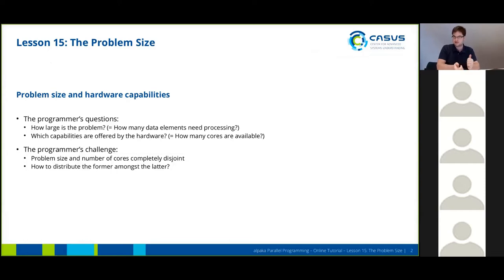First, how large is my problem I want to process? This boils down to how many data elements need processing and which capabilities are offered by my hardware, meaning how many cores I have available. The challenge here is that the problem size and the number of cores are completely disjoint. There's absolutely no relation between your number of cores and your problem size. So now you have to ask yourself how you distribute your problem size among the number of cores you have available.